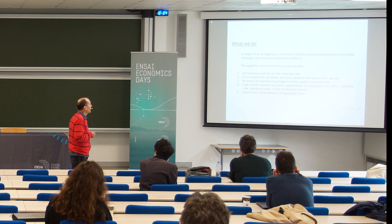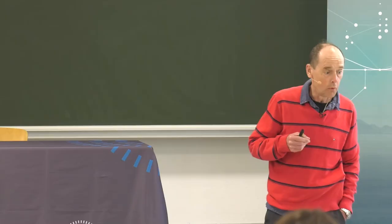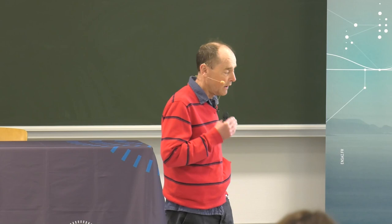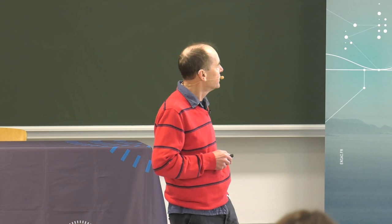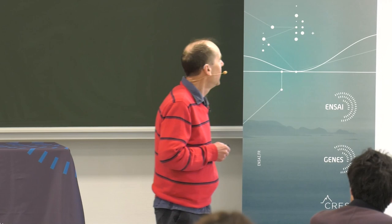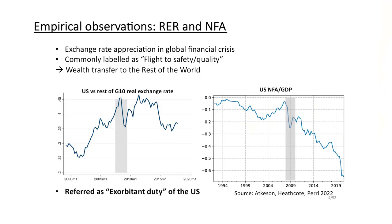Importantly, the model features a capital flow retrenchment during crises — a big fall in both inflows and outflows to all countries. Let me show a few pictures to motivate what we do. It's well recognized that the US has a big real appreciation during financial crises, sometimes seen as a flight to safety or flight to quality. We see that the GFC had this characteristic.